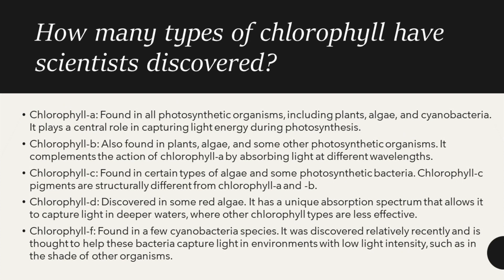How many types of chlorophyll have scientists discovered? There are five types. Chlorophyll A is found in photosynthetic organisms including plants, algae and cyanobacteria, and it plays a central role in capturing light energy during photosynthesis.